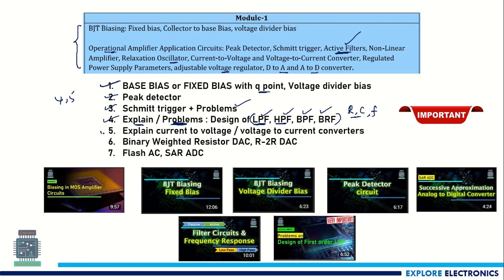Voltage-to-current and current-to-voltage converters have also been asked in previous exams, so this can be expected sometimes. For DAC and ADC, one question can be expected from each. Relaxation oscillator can also be asked if Schmitt trigger and peak detector have not been asked. The very important topics in Module 1 are biasing, filters, and DAC/ADC.